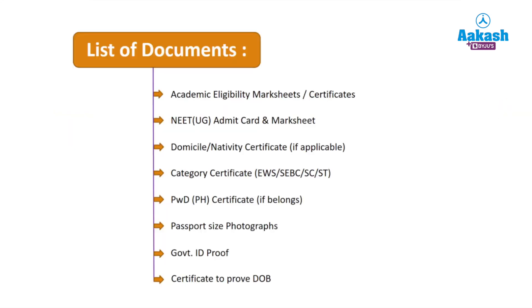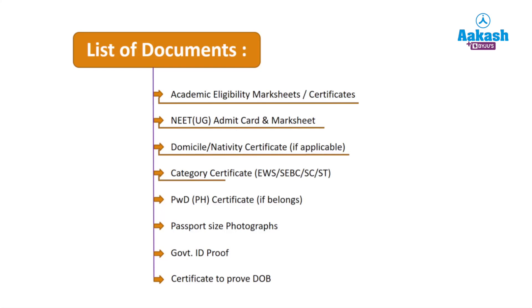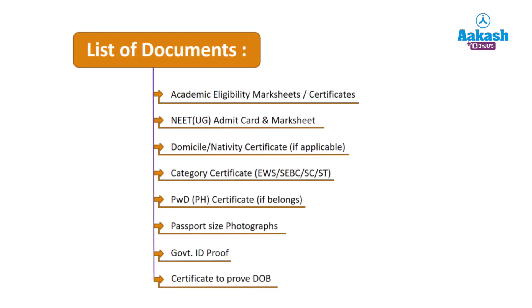The list of documents needed at the time of counseling: academic eligibility mark sheet or certificate, NEET UG admit card and mark sheet, domicile or nativity certificate if applicable, category certificate for EWS, SEBC, SC, or ST, PH certificate if applicable, passport size photograph, government ID proof, and certificate to prove date of birth.